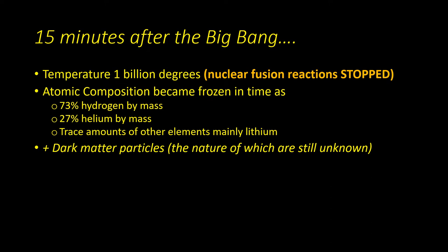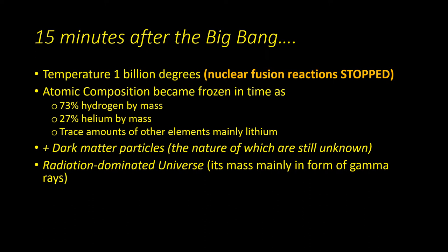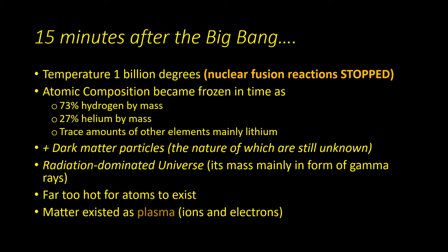There was also dark matter particles, the nature of which is still unknown. But if we look at the mass of the universe, it was mainly in the form of energetic gamma rays. It was far too hot for individual atoms to exist, so it was in the form of a plasma with atomic nuclei and electrons.